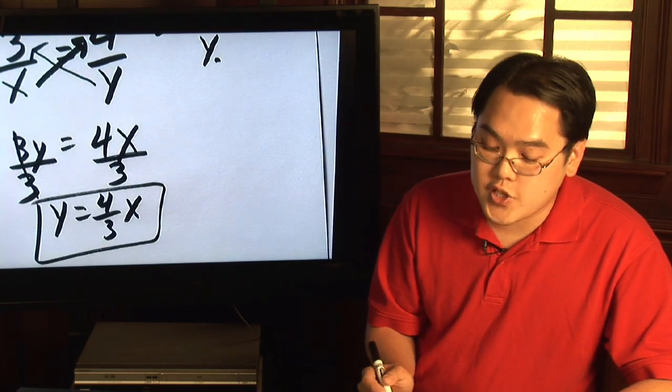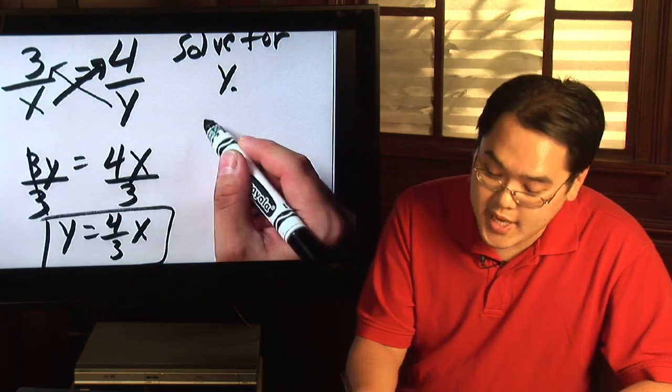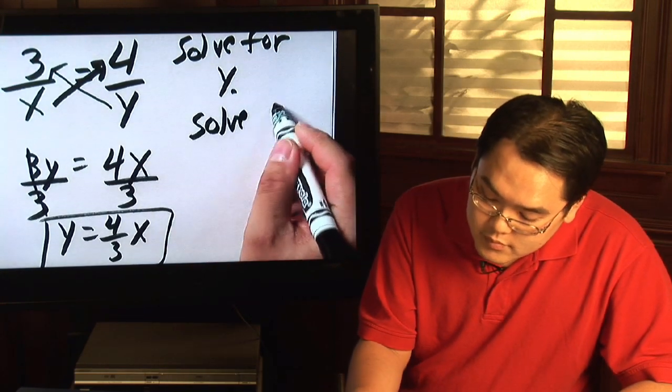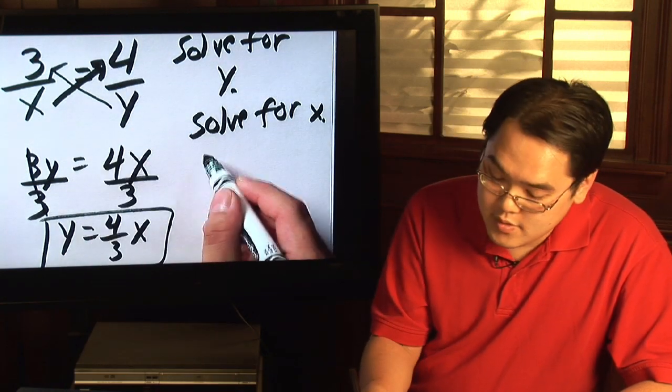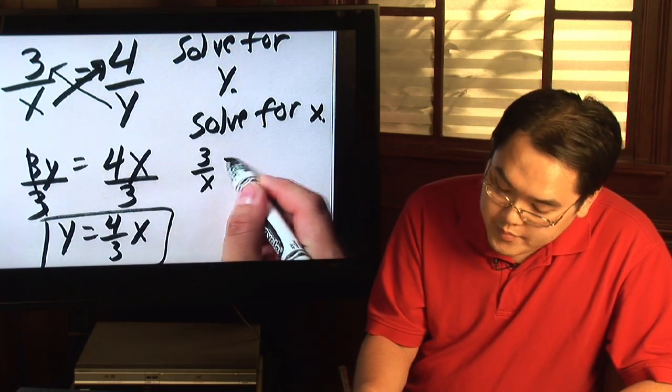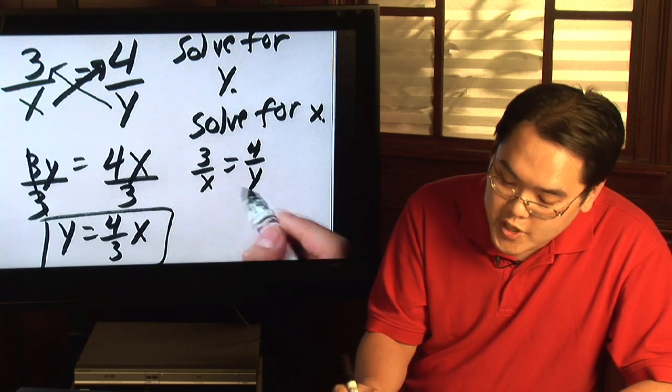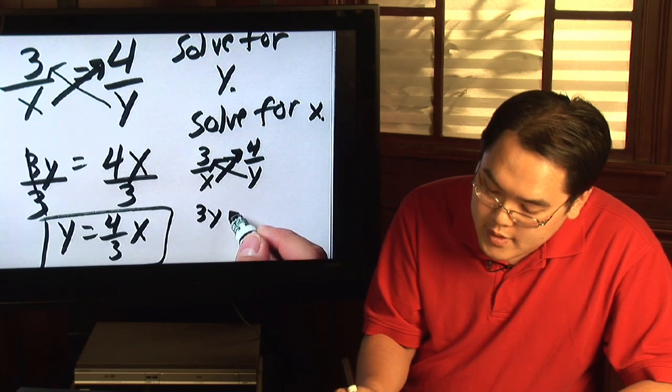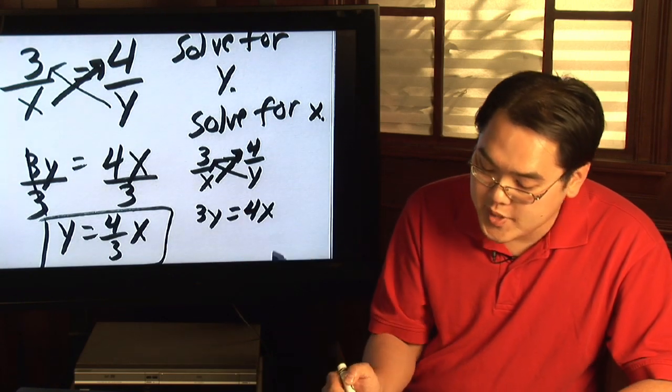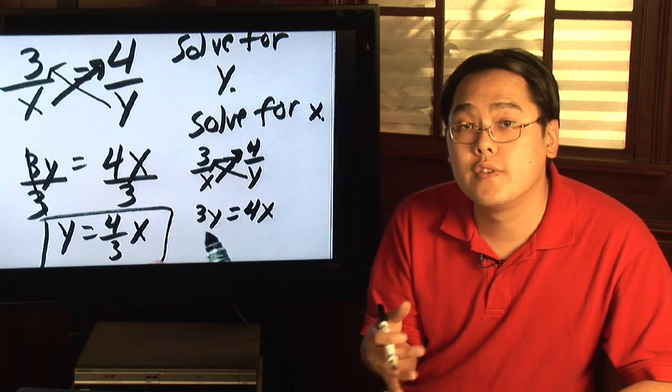Now, if the directions say solve for x instead, and you have the same problem, you still do the cross multiplication, so your terms will still be the same. So you have 3y equals 4x. But this time, you want to solve for x. You want to isolate the x term.